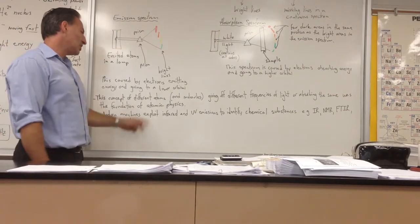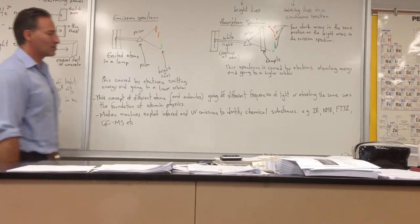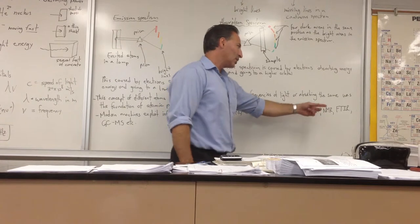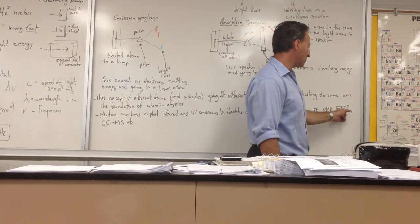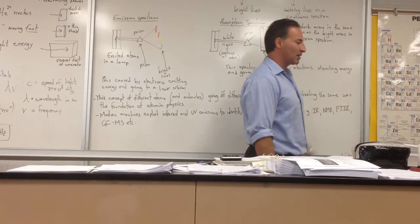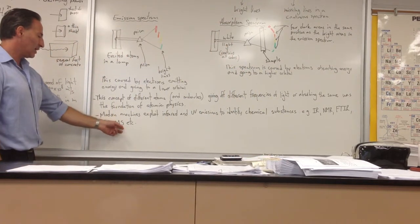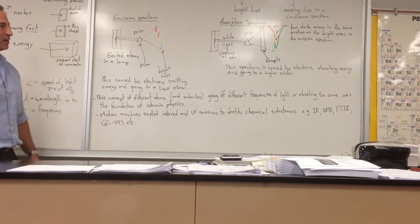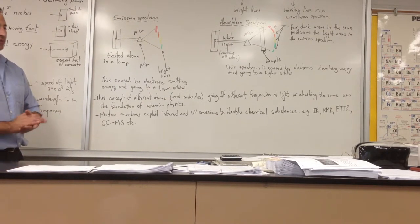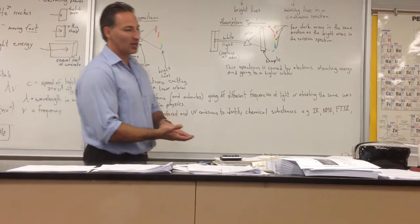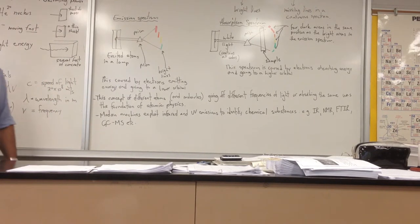And then the last thing I'd like to throw in there is that modern machines exploit infrared and ultraviolet emissions to identify chemical substances. So when you get to university, you're going to hear about IR, which stands for infrared. You're going to hear about NMR, which stands for Nuclear Magnetic Resonance. You're going to hear about FTIR, which is Fourier Transform Infrared Spectroscopy. And you'll hear about GCMS, Gas Chromatograph Mass Spectrometer. All of these machines are now used. They're very high-tech, and they're used for identifying unknown substances or samples of chemicals, or for determining what the concentration of certain chemicals are in solutions of unknown origin.